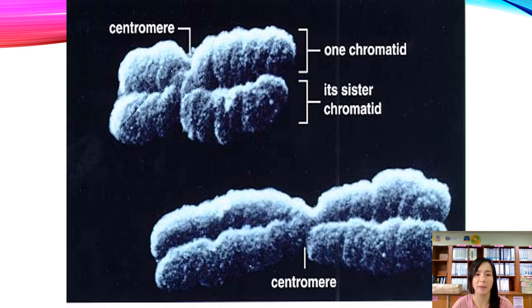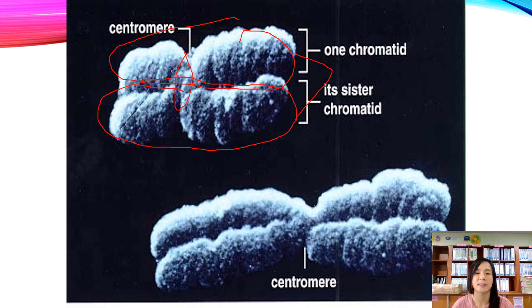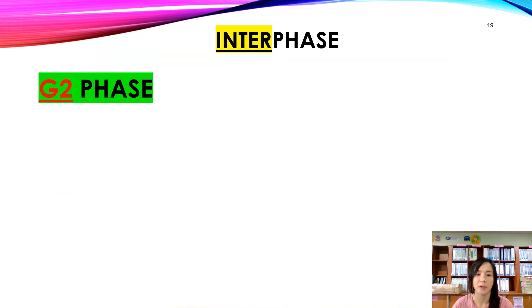Another diagram shows one chromatid here and another chromatid here — these are sister chromatids joined at the centromere, forming a duplicated chromosome. This means the chromosome has already undergone replication or duplication. That concludes S phase.